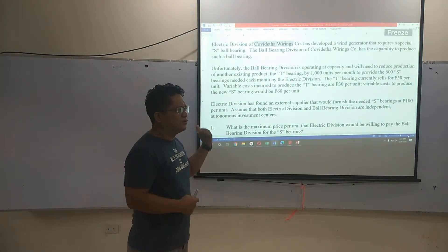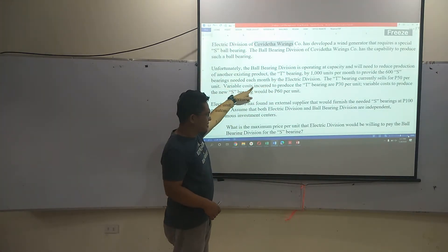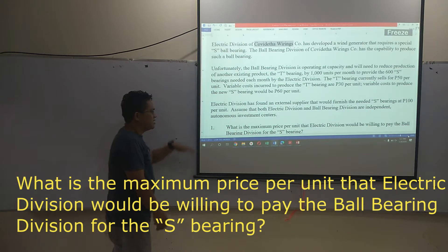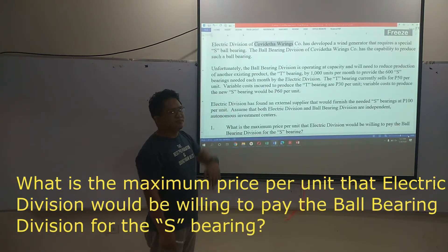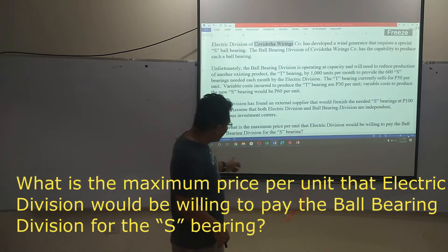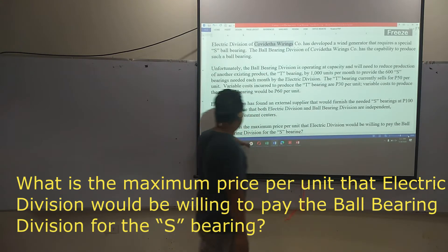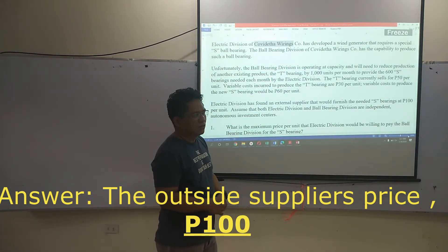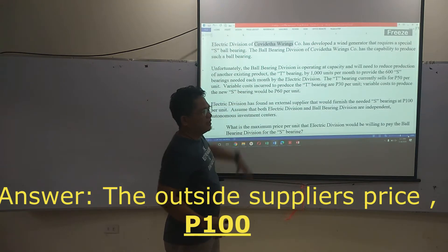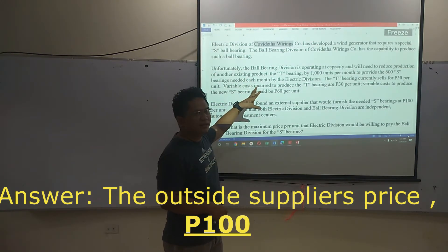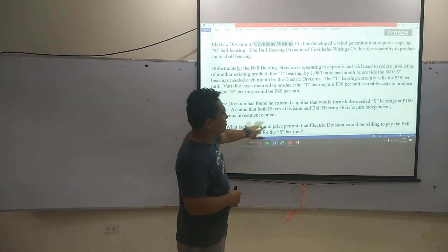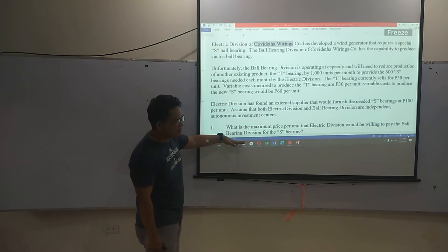If they produce internally, they would be saving $60. But we have to consider that ball bearing would have to sacrifice T bearings. So the first question is: what is the maximum price per unit that electric division would be willing to pay ball bearing for the S bearing? The answer is $100, because there's an outside supplier offering $100. You would not pay more than $100 — you can source it externally without disrupting company operations.